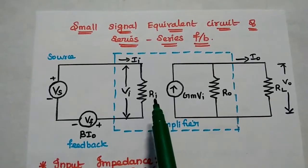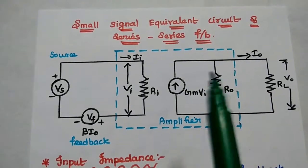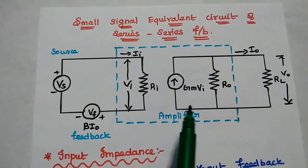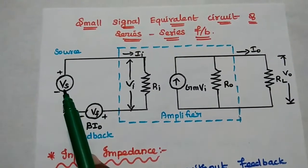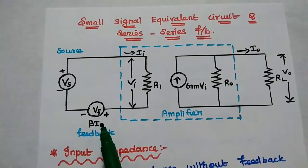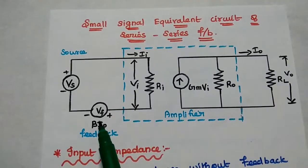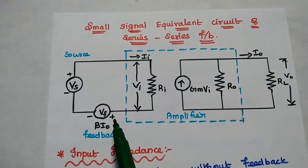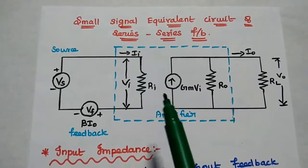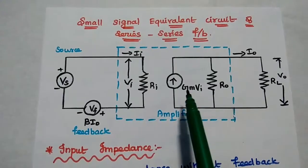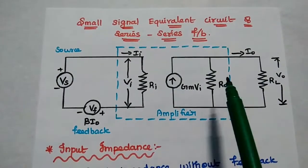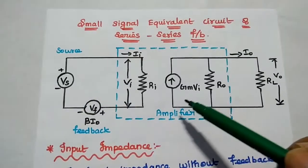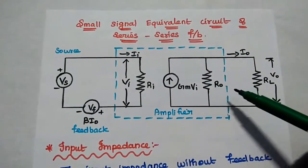Next, we are going to analyze the input impedance and output impedance of this series-series feedback amplifier. We can understand the concept using the small signal equivalent circuit. Here the input is a voltage signal, the feedback is also a voltage signal, so we connect the feedback voltage signal in series with the input signal — mixing is done in series connection. The amplifier can be replaced with the equivalent circuit which consists of the input resistance and the transconductance multiplied with the input voltage to produce the output current. Since the output is a current signal, we use a Norton circuit: the current signal in parallel with the output resistance.